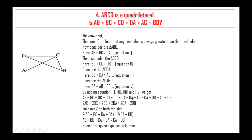So we have 2AB, 2BC, 2CD and 2DA on the left side, and 2CA and 2DB on the right side. Taking 2 out on both sides, we get AB plus BC plus CD plus DA is greater than CA plus DB. Hence the given expression is true.